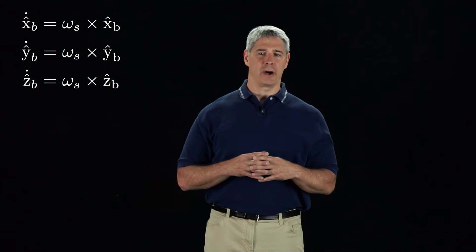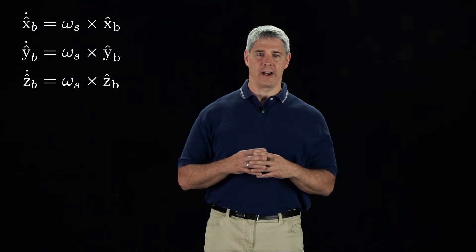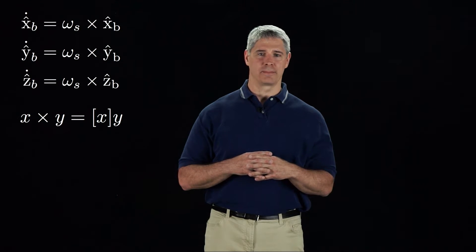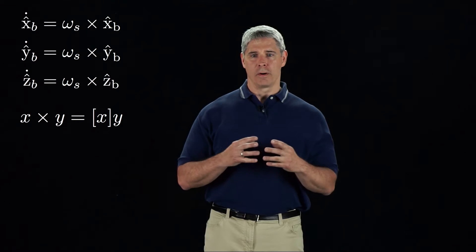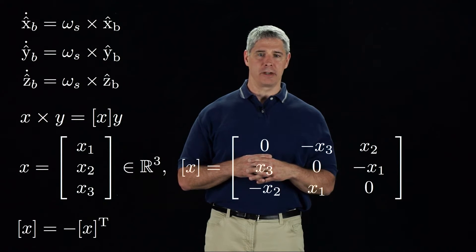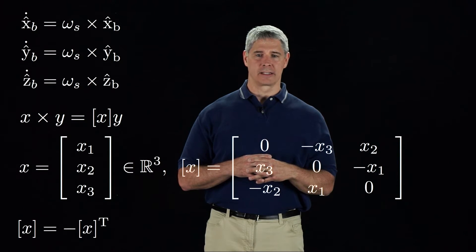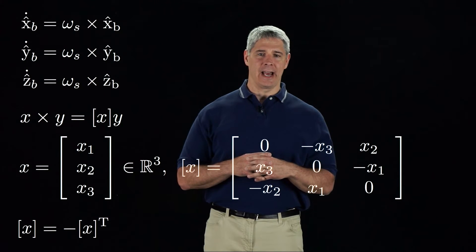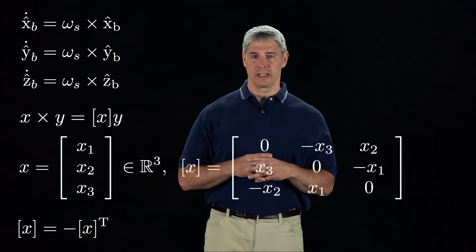Since we will often take the cross product of a vector with another vector, we define a bracket notation that allows us to write X crossed with Y as bracket X times Y, where bracket X is a 3-by-3 matrix representation of the 3-vector X. The matrix bracket X is called a skew-symmetric matrix because bracket X is equal to the negative of its transpose.